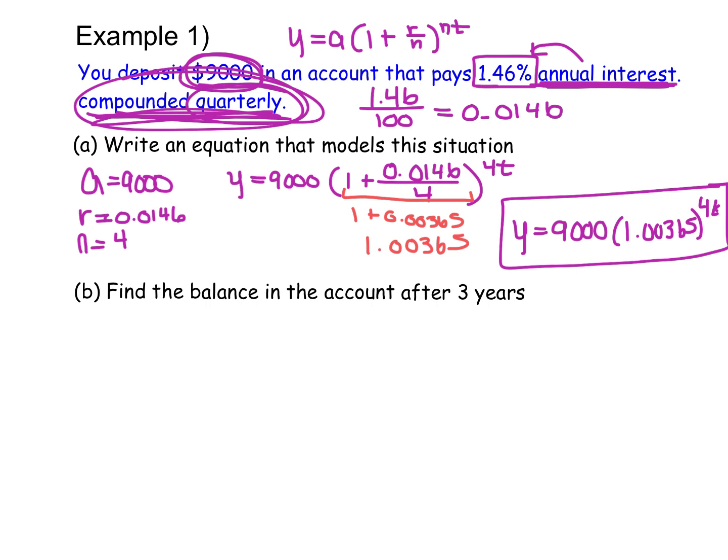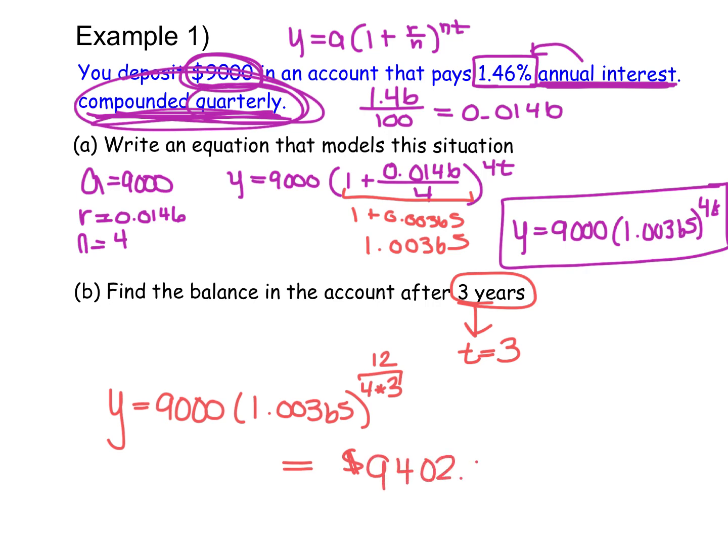This last part says find the balance on the account after 3 years. Remember, T is our years, so this is where T is going to equal 3. So if I go to my equation, Y equals 9,000 times 1.00365 to the power of 4 times 3. Well, the power of 4 times 3 is really 12, so I'm going to take that to the power of 12. So 9,000 times 1.00365 to the power of 12. In that amount of time, in that 3 years, my account will grow, and I will end up with about $9,402.21 if I don't touch my money and it continues to grow in this way. So I'll gain about $402 over those 3 years.